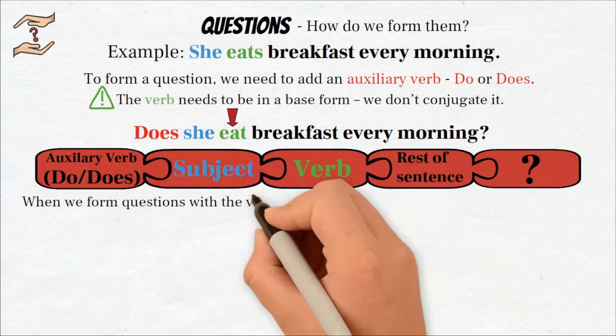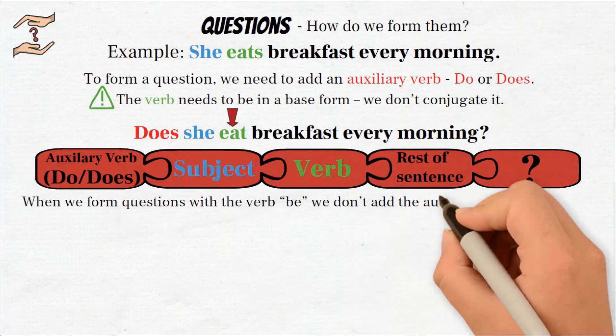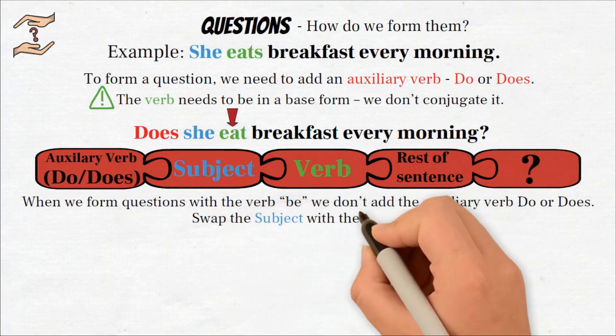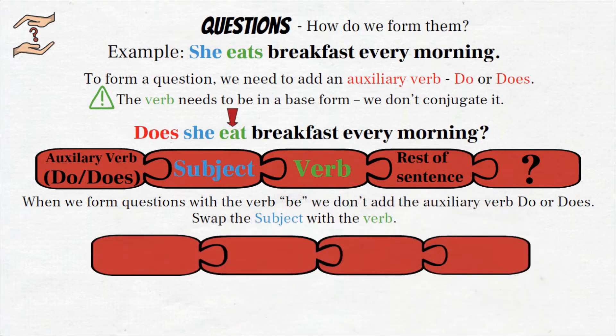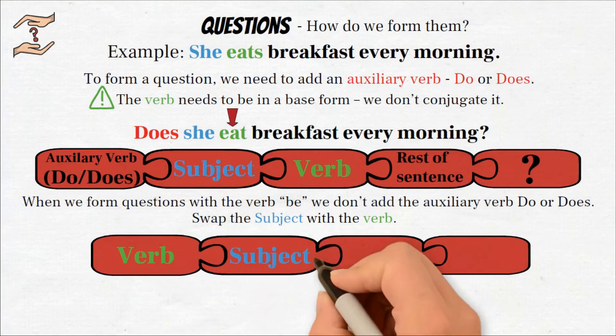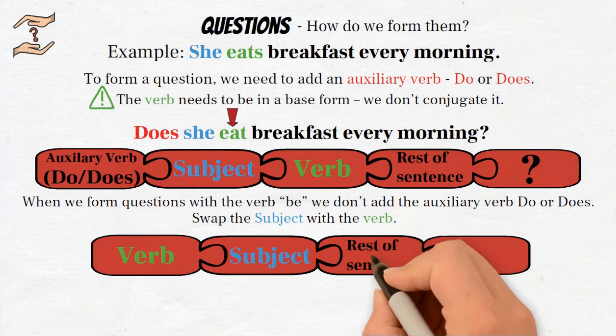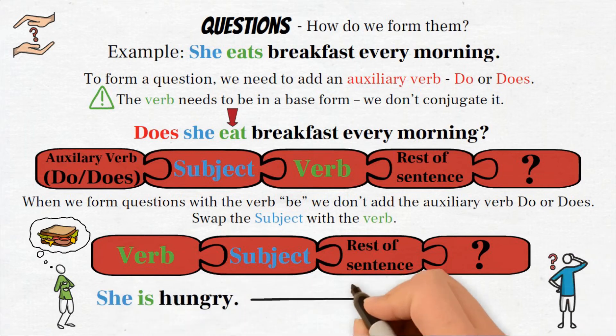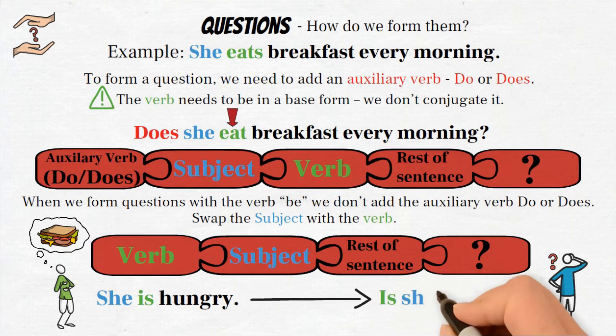We have an auxiliary verb do or does, subject, verb, and the rest of a sentence. However, when we form questions with the verb be, we don't add the auxiliary verb do or does. All we need to do is to swap the subject with the verb. So: verb, subject, and the rest of the sentence. See the difference here: she is hungry, and is she hungry?